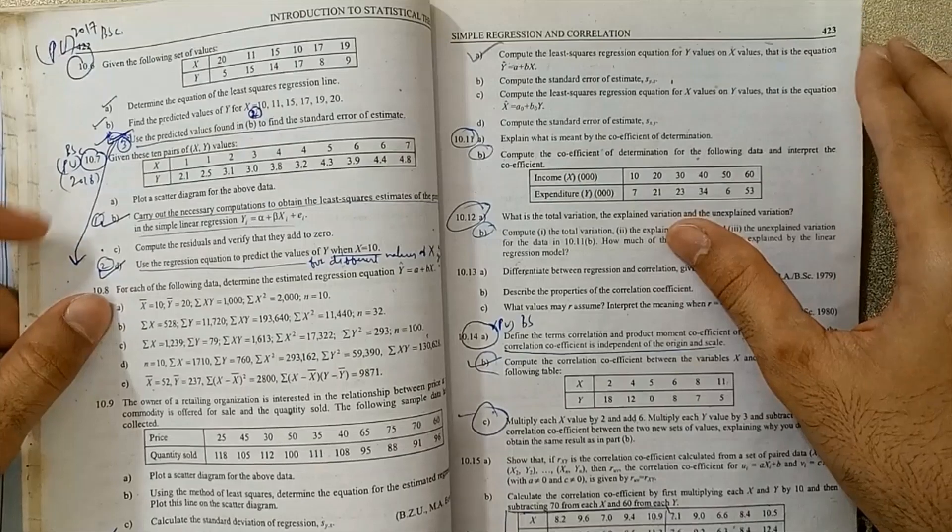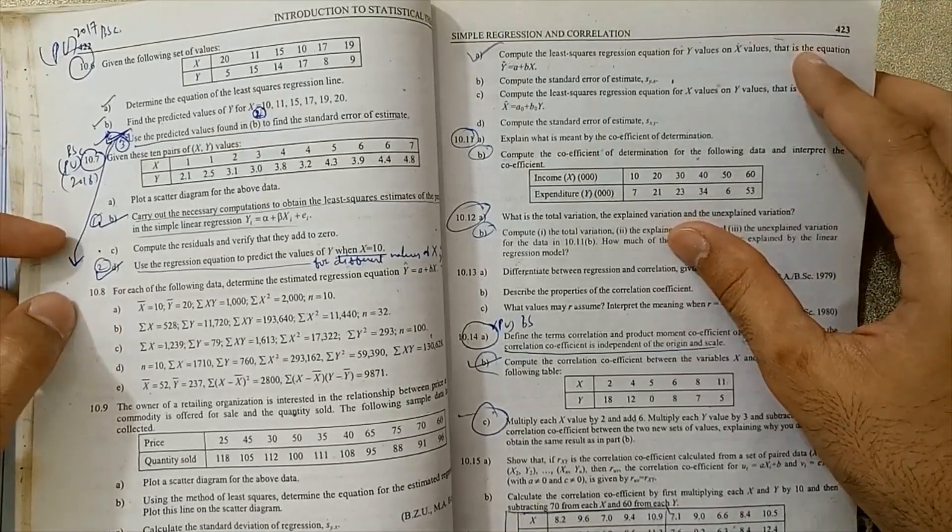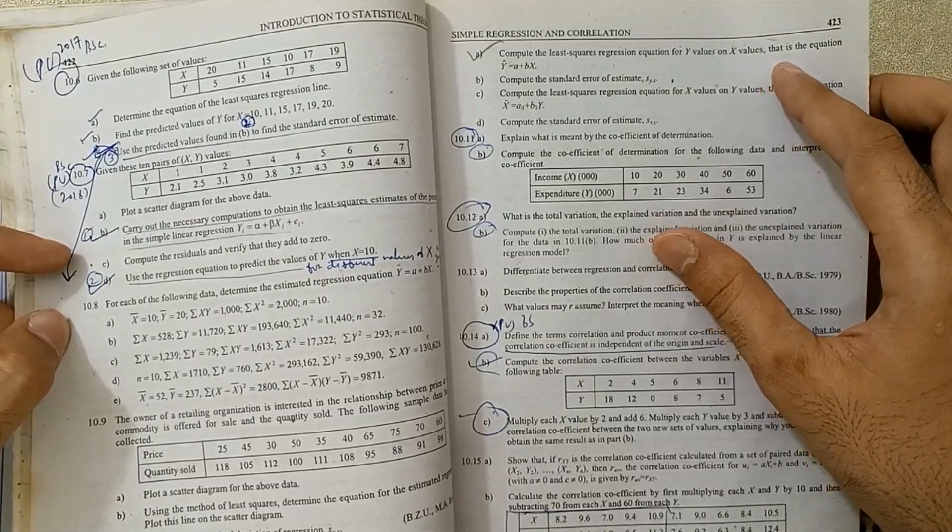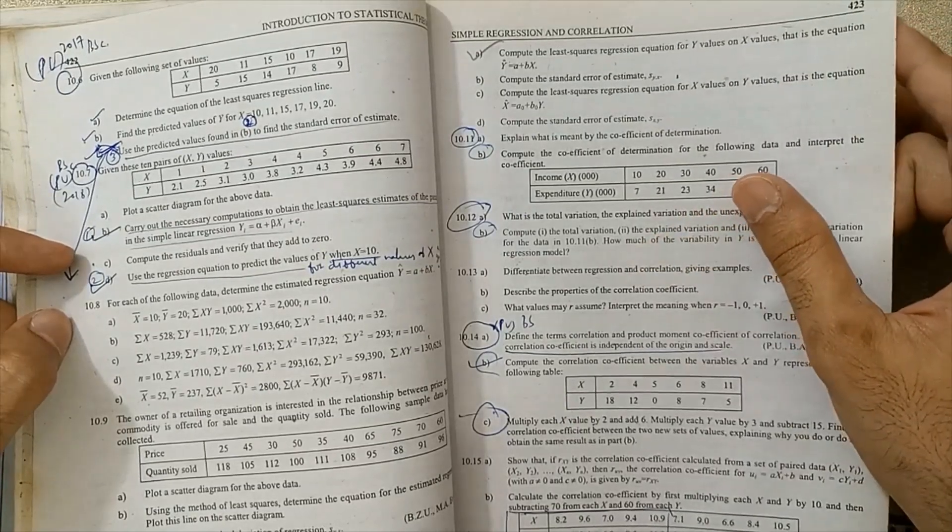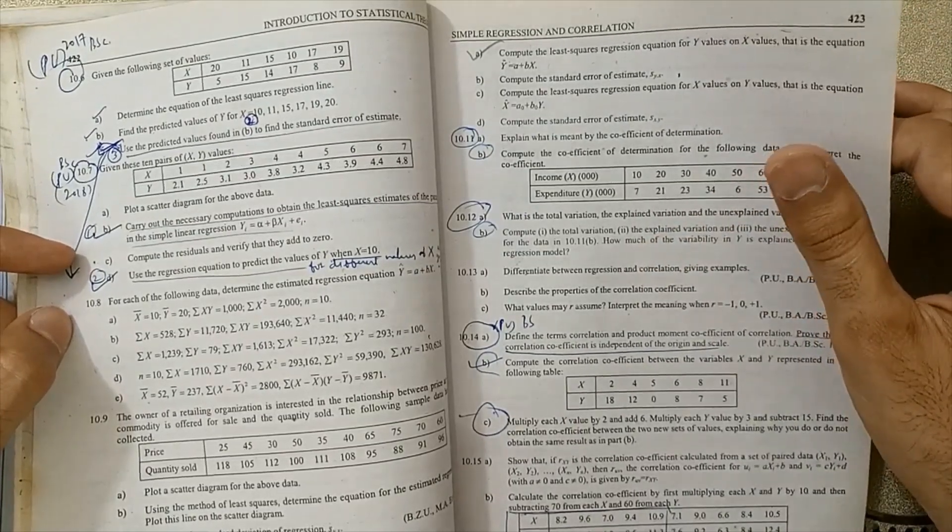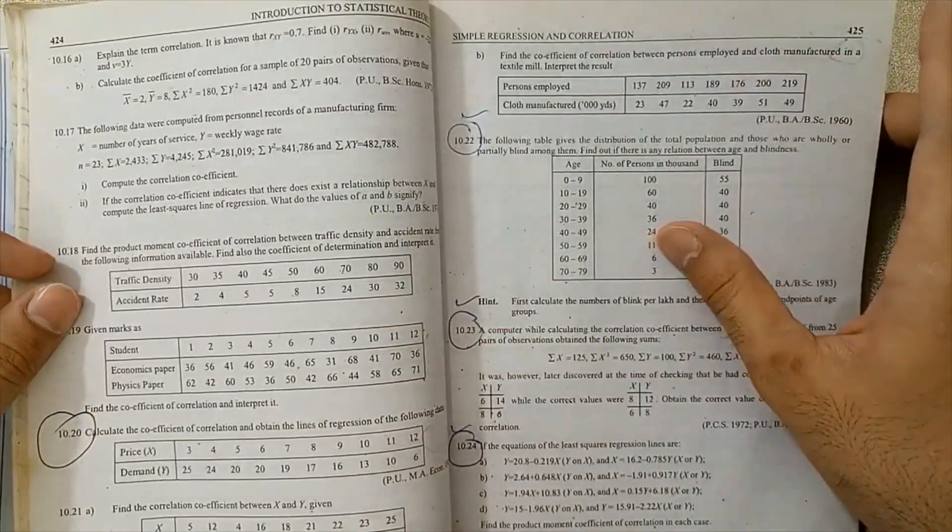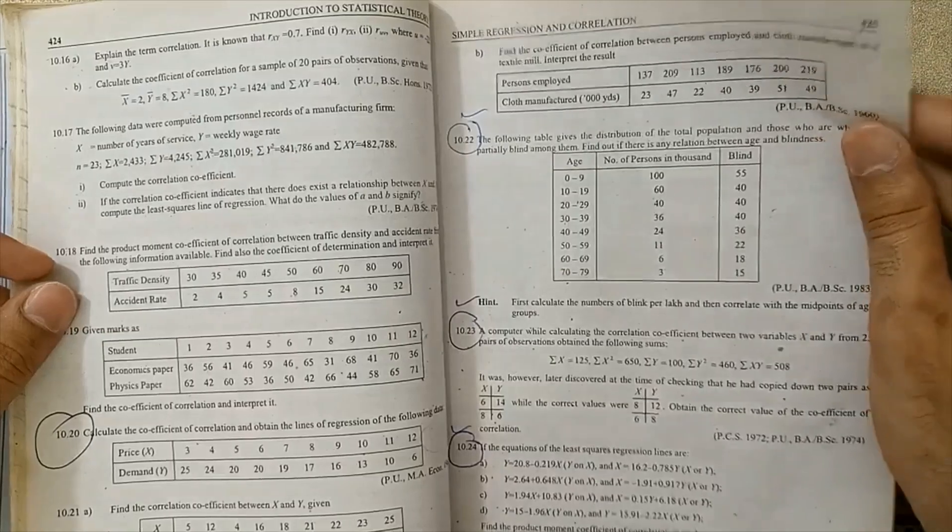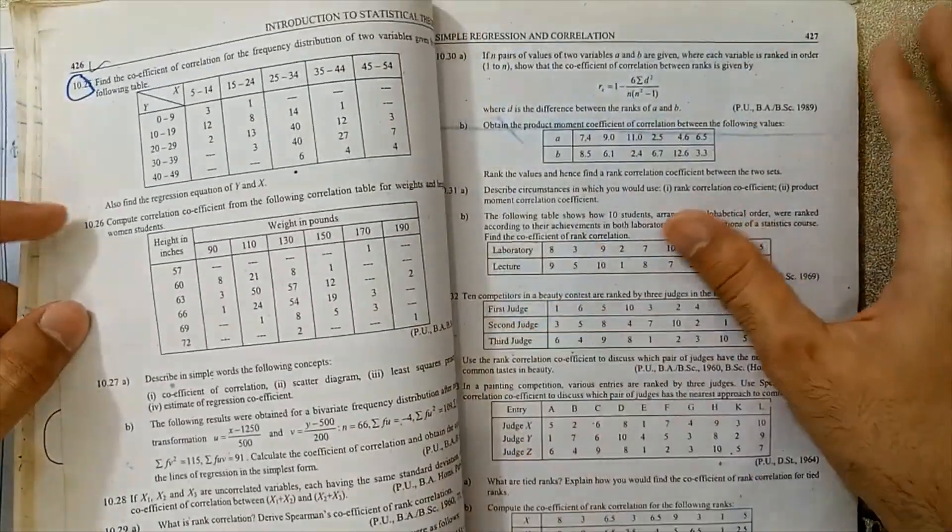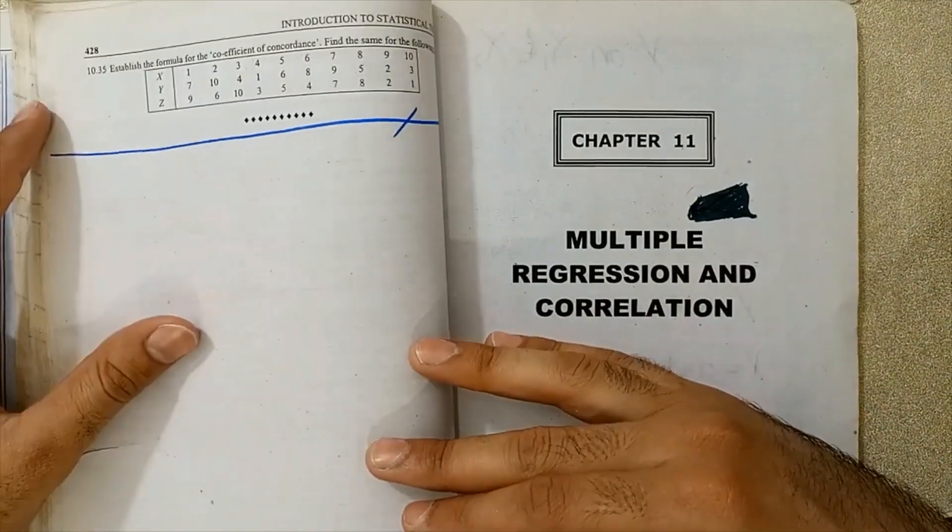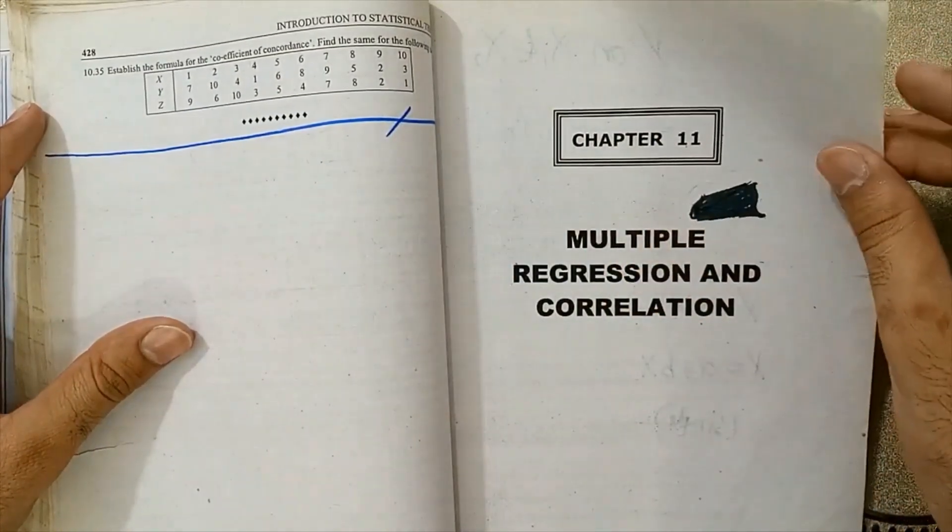Next, 10.6, Question 10.7 ABC—all parts very important. 10.11, 10.12, 10.14 ABC parts. Next, 10.15 is very important. 10.20, 10.22, 10.23, 10.24, 10.25. All these questions are very important for exams on BSc Statistics.